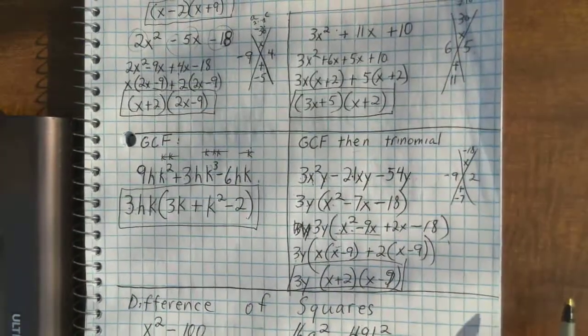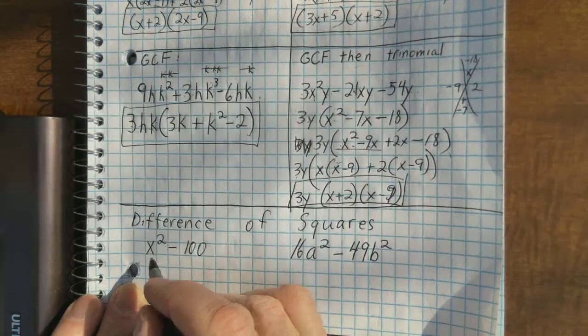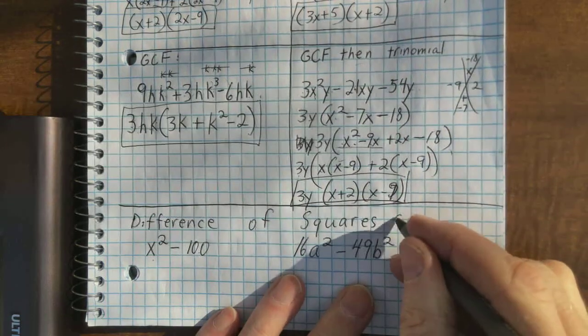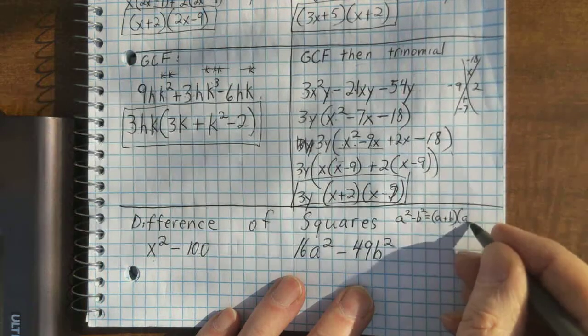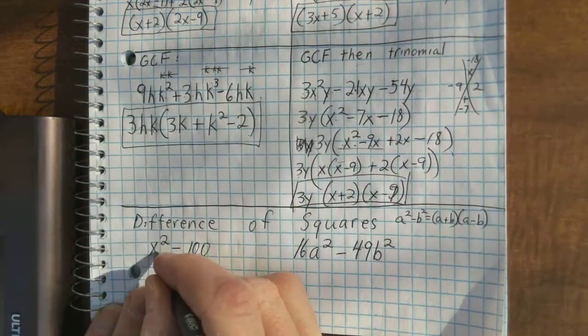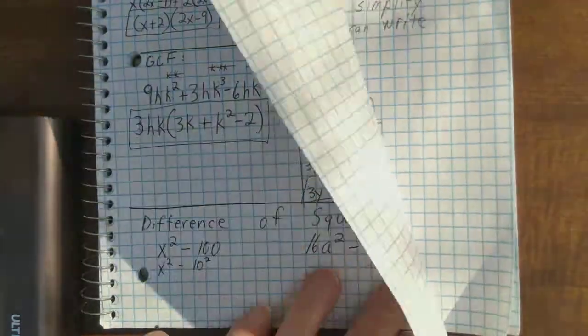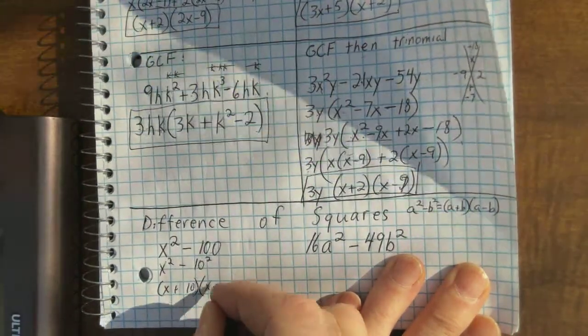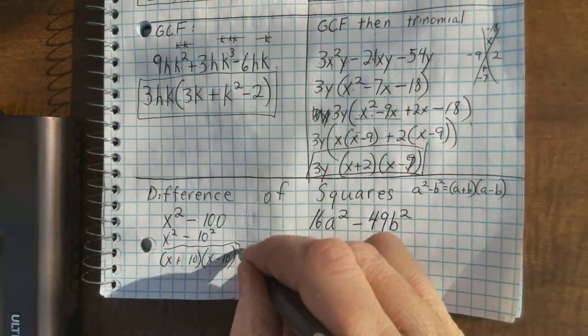All right. One more thing is difference of squares. x squared minus 100. I don't know if you remember difference of squares that a squared minus b squared is equal to a plus b times a minus b. That is the pattern. Well, this is x squared minus 10 squared. So, I'm going to do this as x plus 10 times x minus 10. And I'm done. That's how that one factors. Difference of squares.